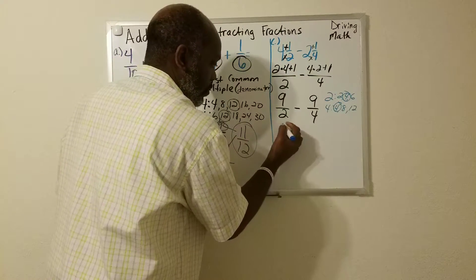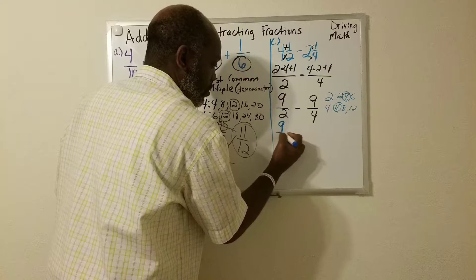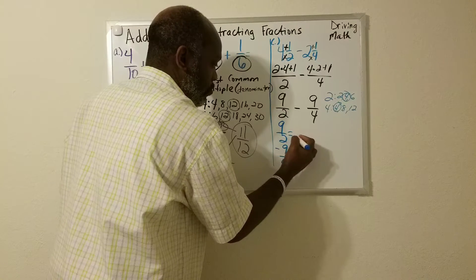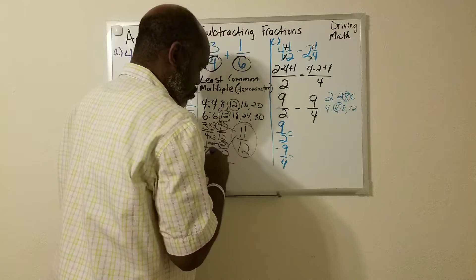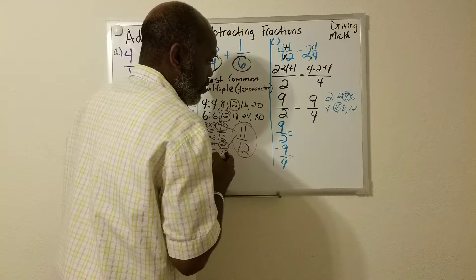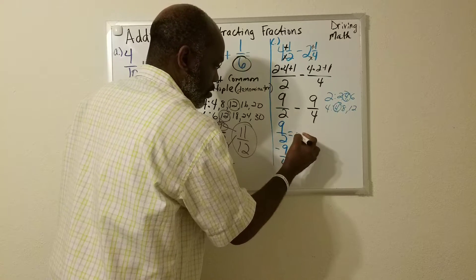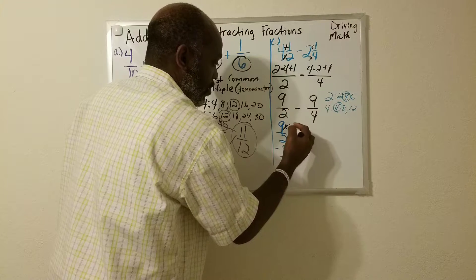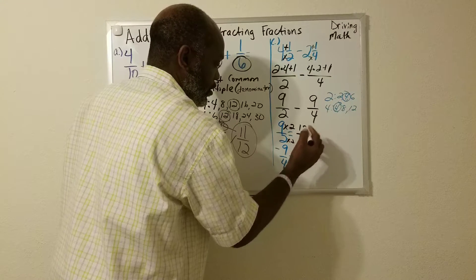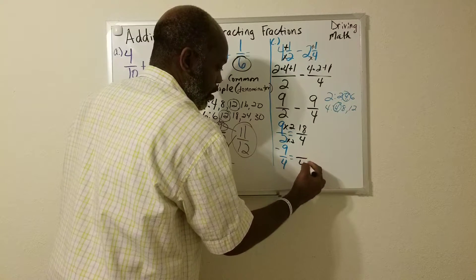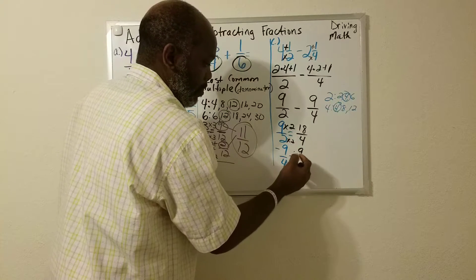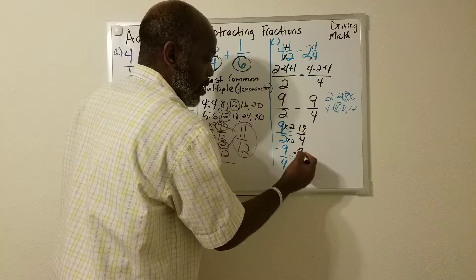So remember I said I stack them. Nine over two minus nine over four. I'm going to rewrite these fractions with the new denominator. All right. So two times two is four. Nine times two is 18. This denominator stays the same. 18 minus nine.